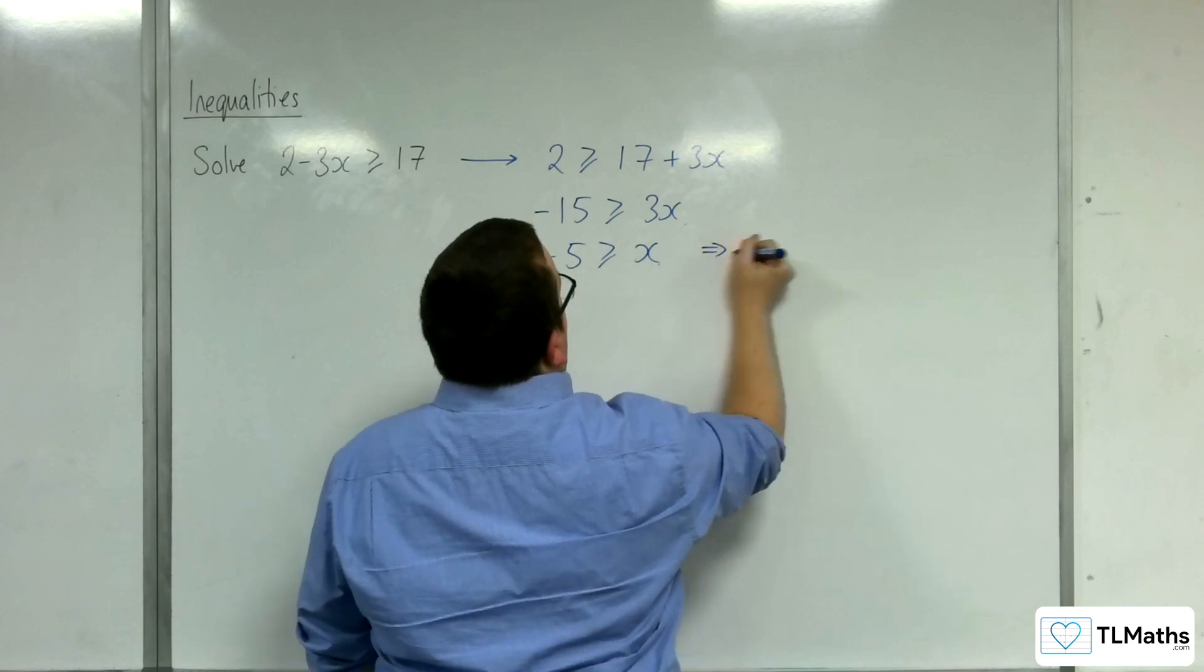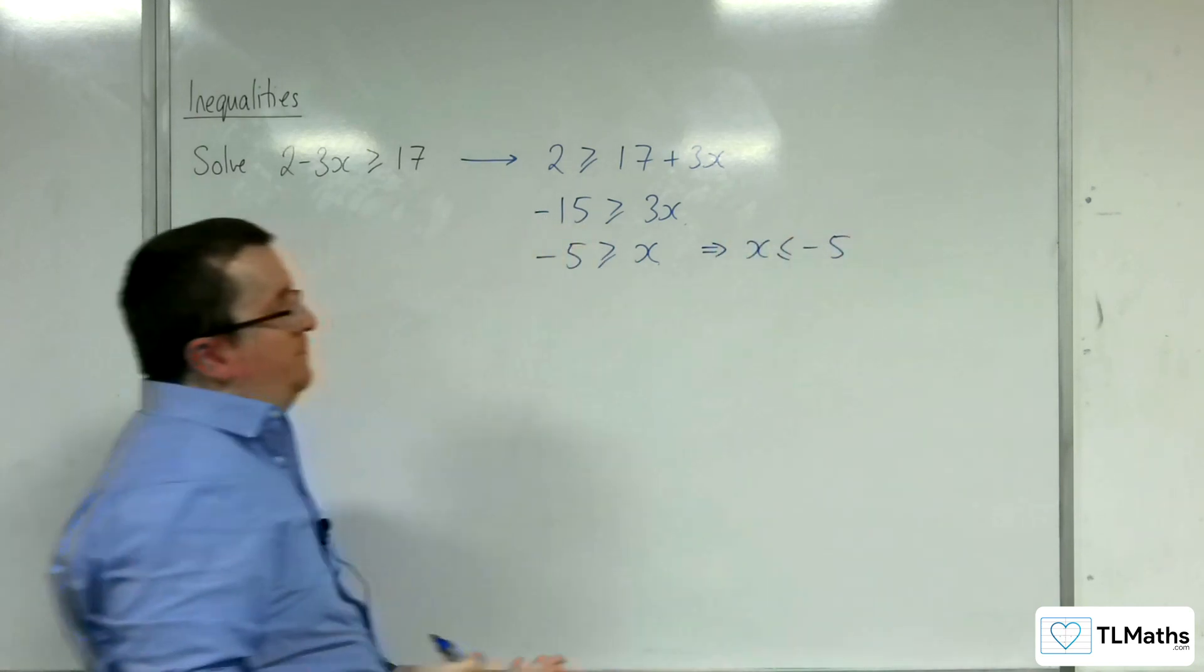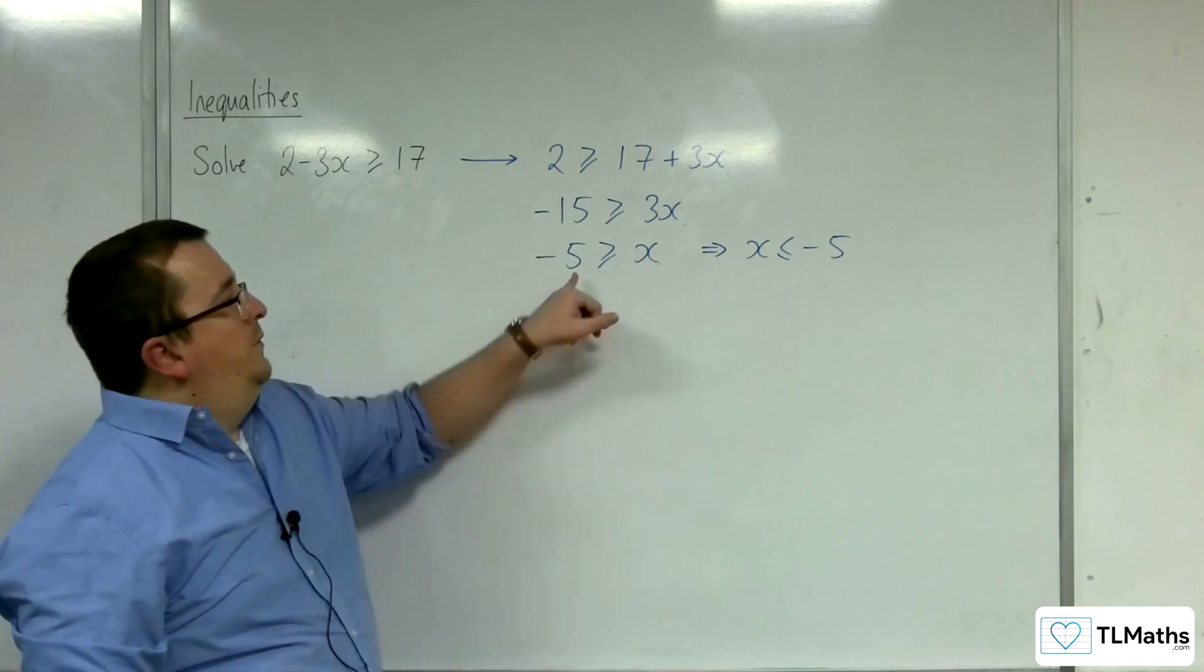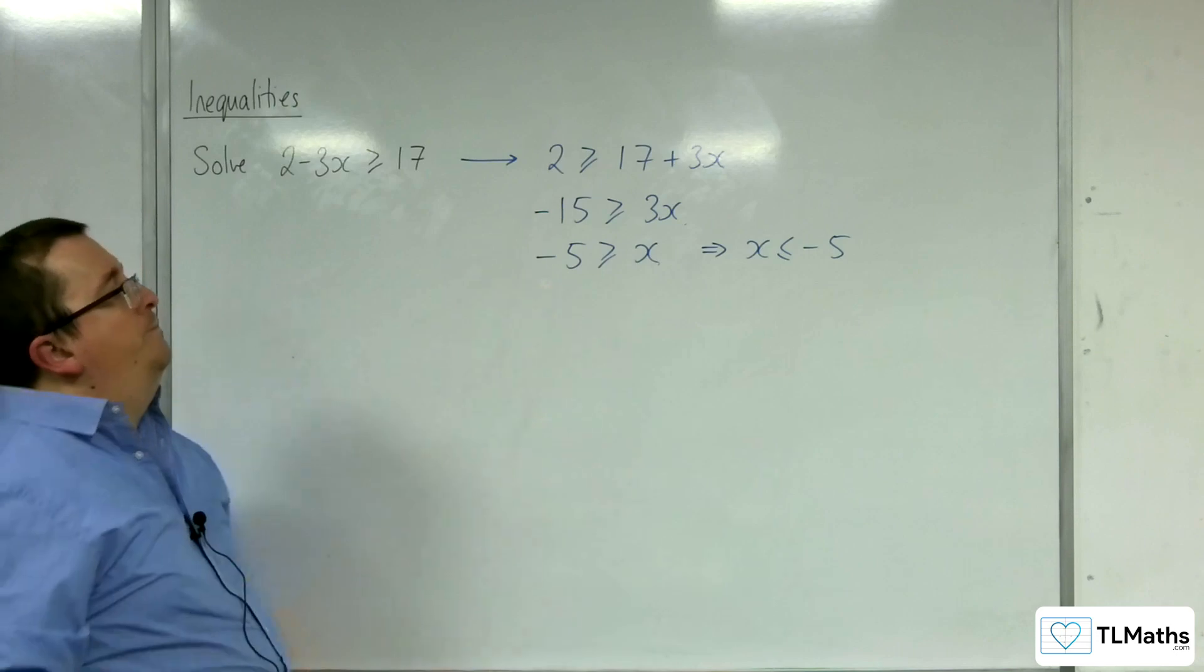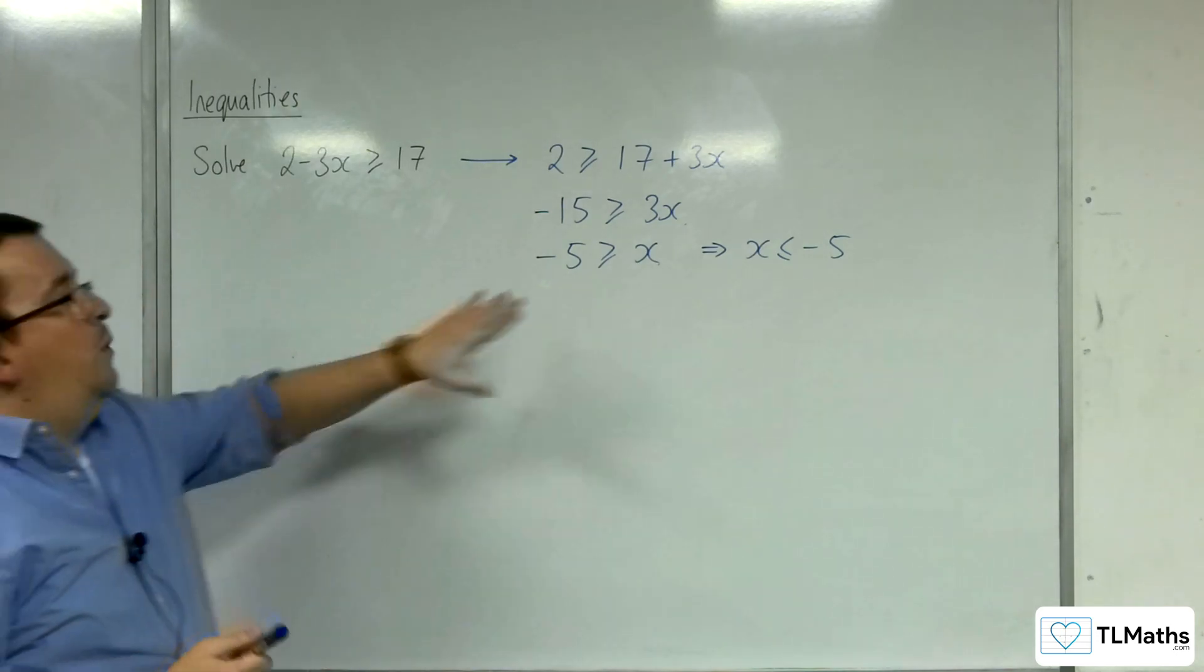Which can then just be written as x is less than or equal to minus 5. Just by reading it from right to left, x is less than or equal to minus 5.